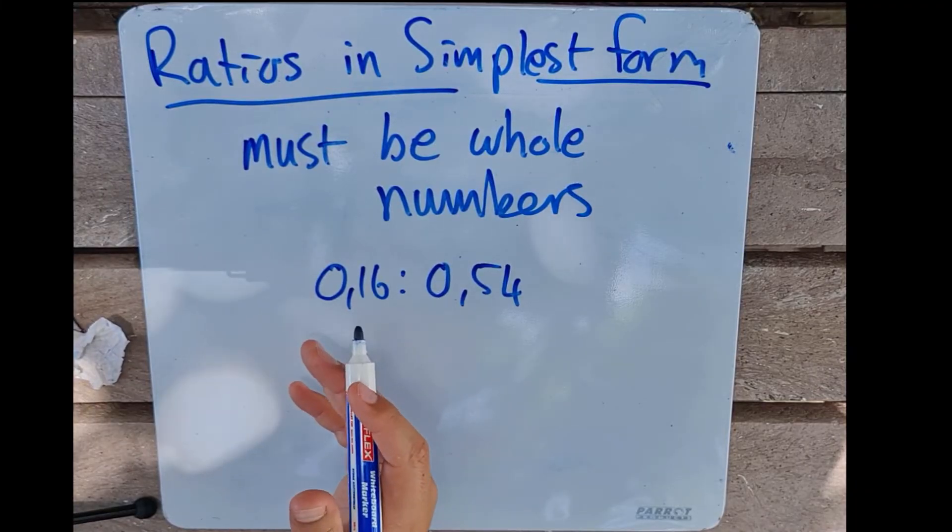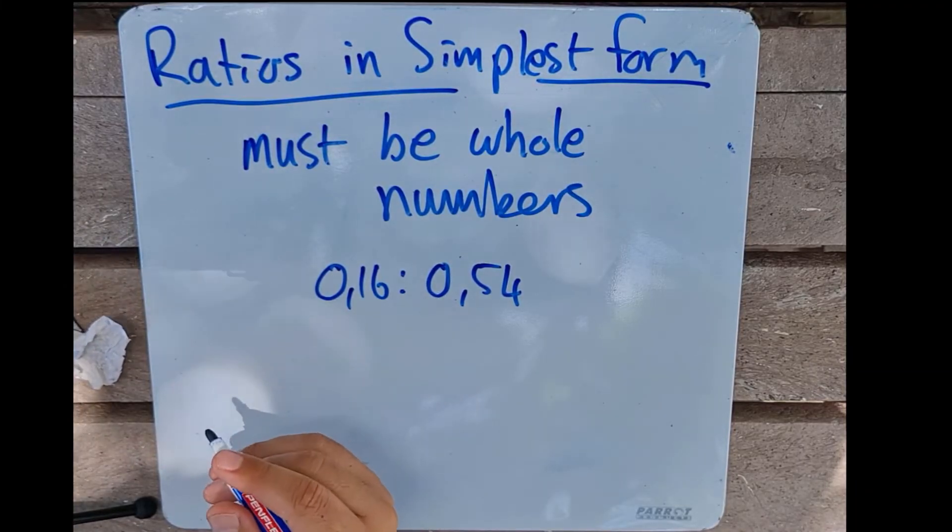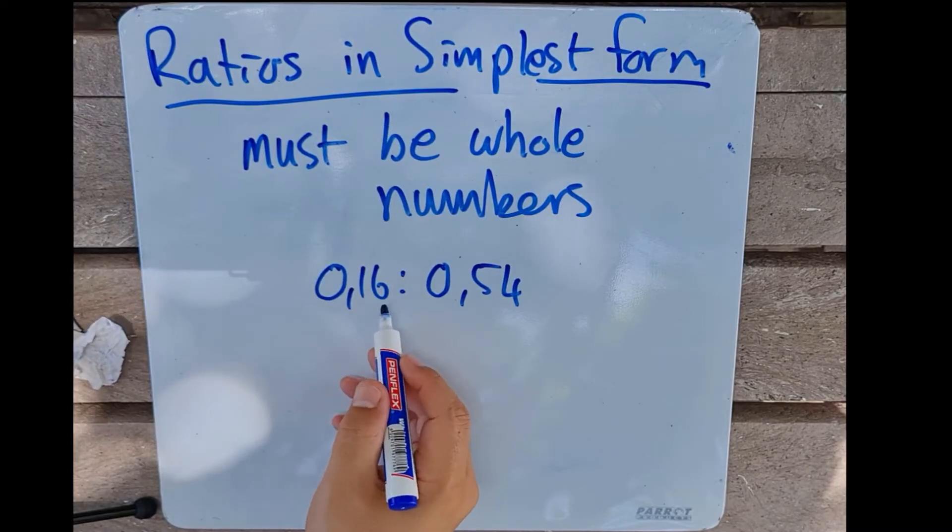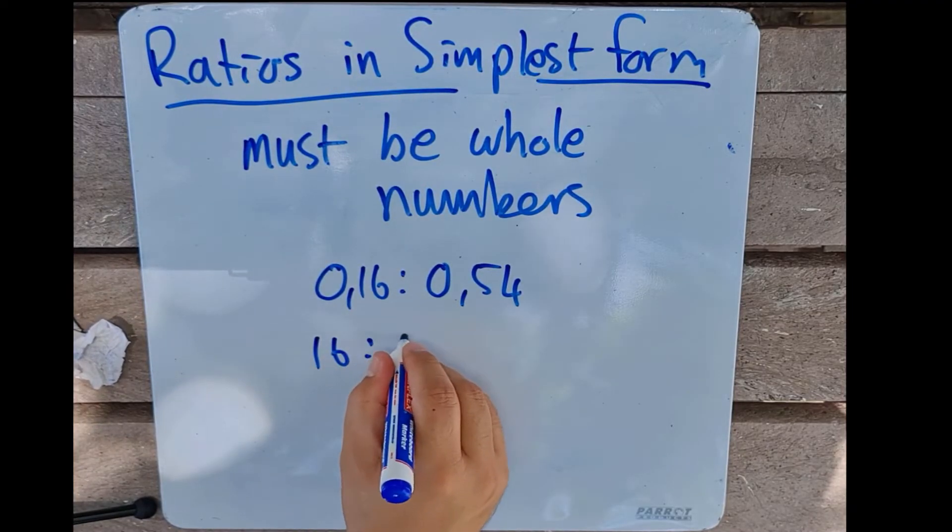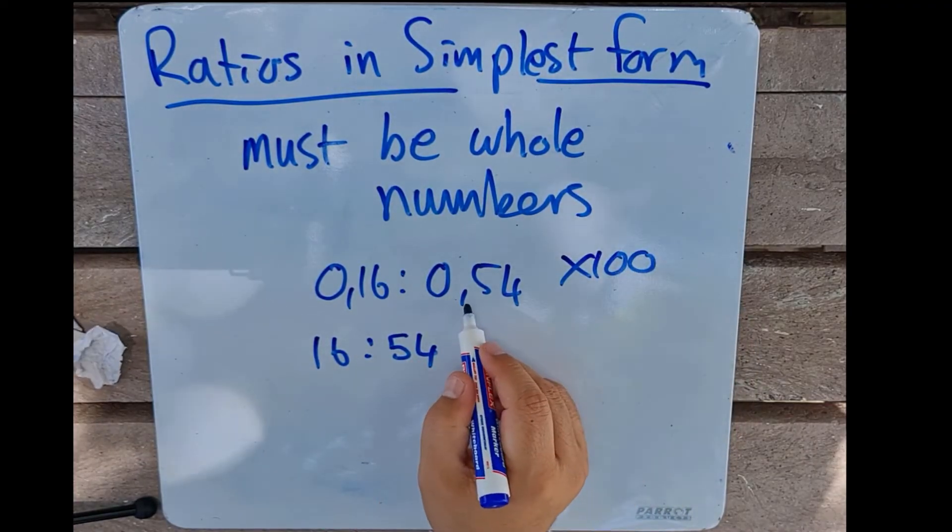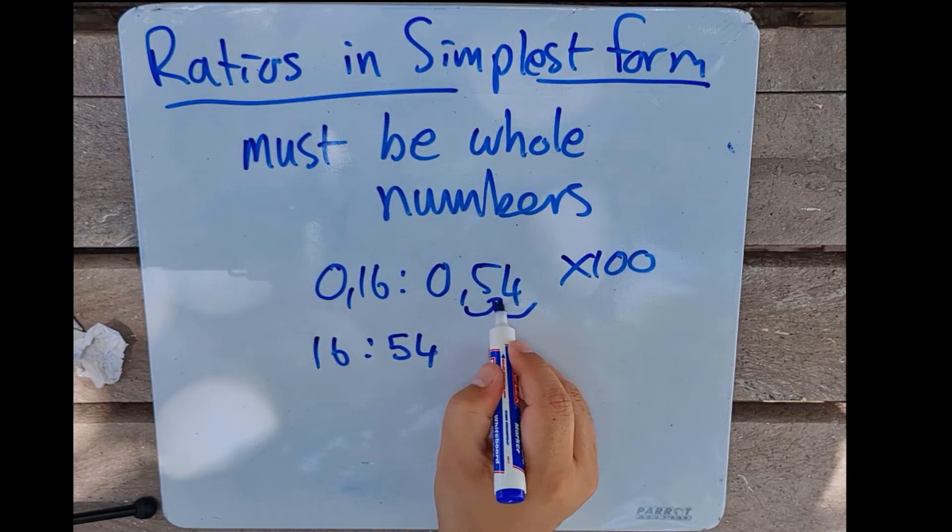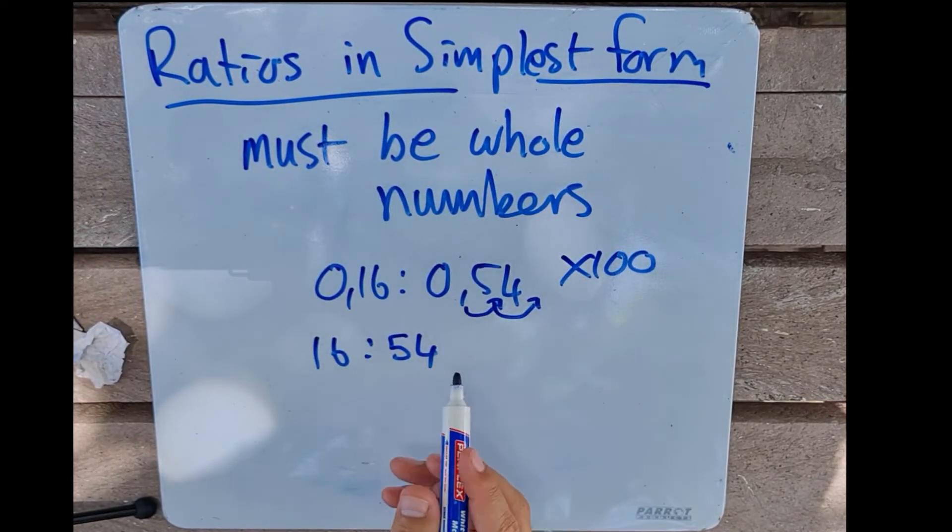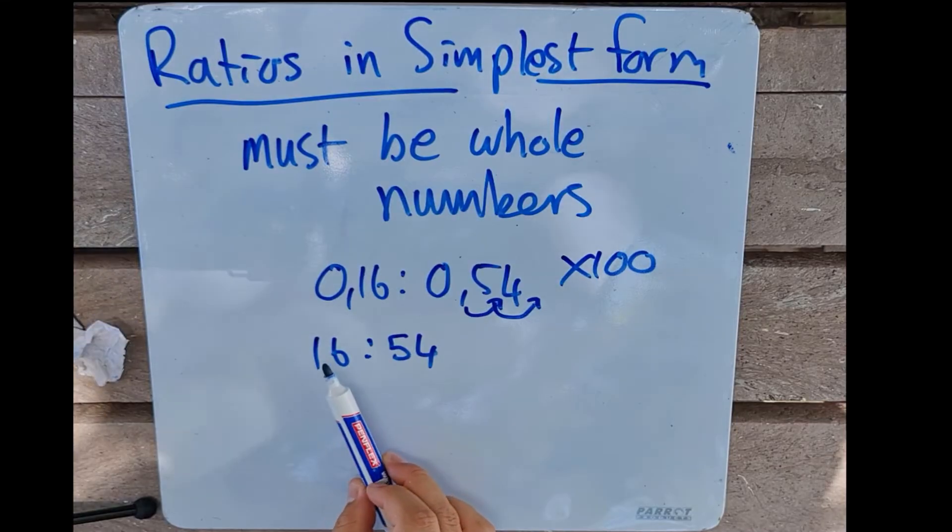We are going to multiply by 100 because we need to move that decimal over, and that's going to end up being 16 to 54. Remember when I multiply by 100, what am I doing? Moving my decimal point over, and that gives me a ratio of 16 to 54.